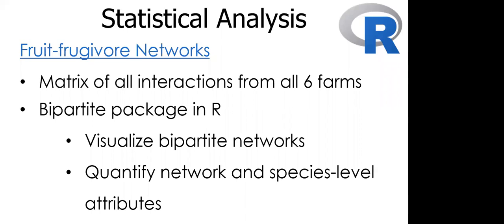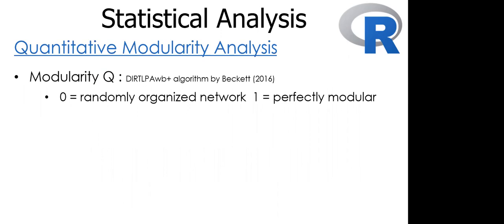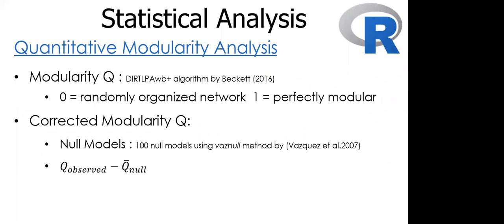To analyze the network, first I constructed a weighted network by pooling all interactions from all six farms. Next I created network visuals and quantified both network and species level properties using the bipartite package in R. I used the algorithm published by Beckett 2016 to detect modules in the network and compute modularity Q. Modularity Q is a measure of how well links and interactions can be separated into modules. To account for sampling size and sampling effort, I calculated null expectations based on 100 random networks.